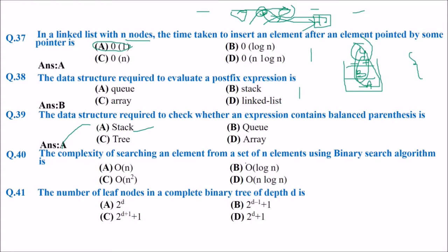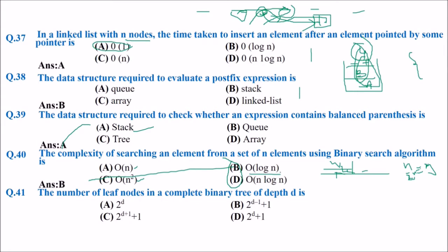The complexity of searching an element from a set of N elements using binary search is O(log N). In binary search, you go to the center element and divide N into two equal parts — N/2, then N/4, and so on. Each step is a power of 2, so taking a log gives you order of log N.